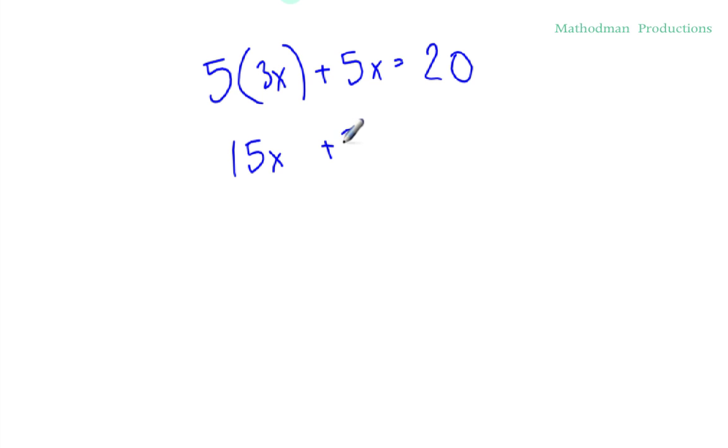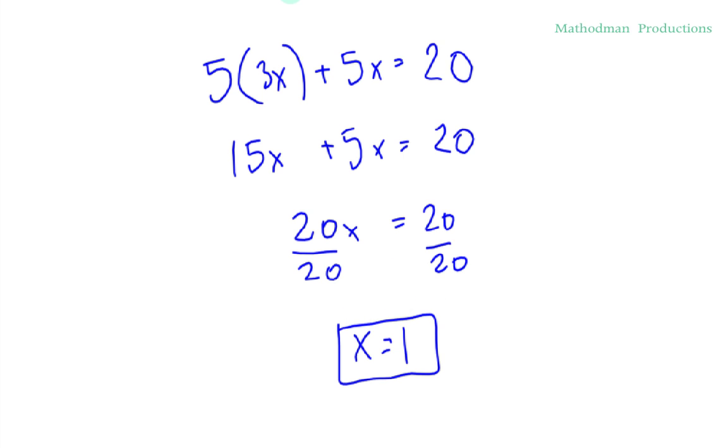15x plus 5x equals 20. Combine like terms. You get 20x equals 20 and solve from here. Divide 20 to both sides and we're halfway done. We get x equals 1. That's half the problem done right there.